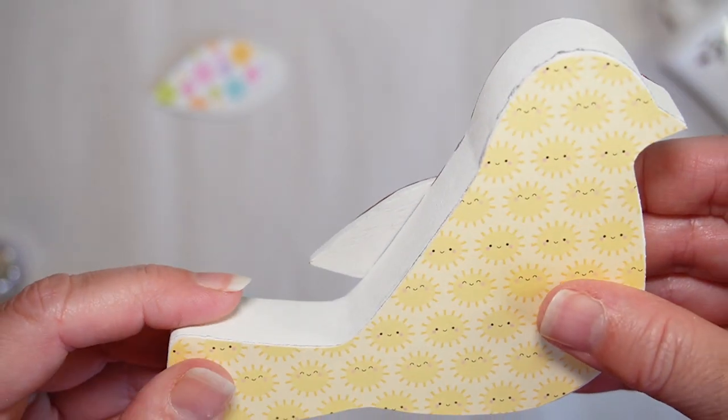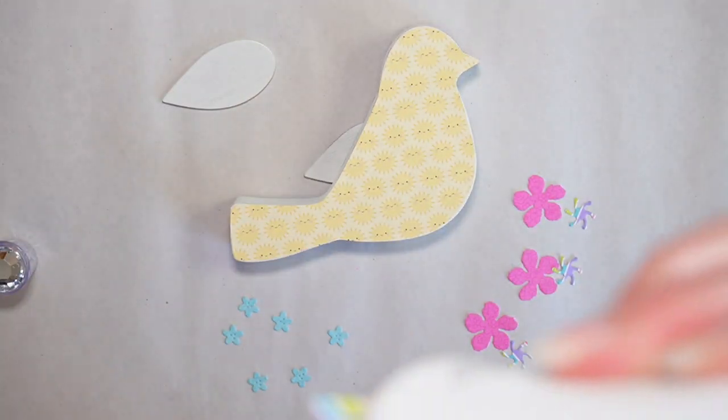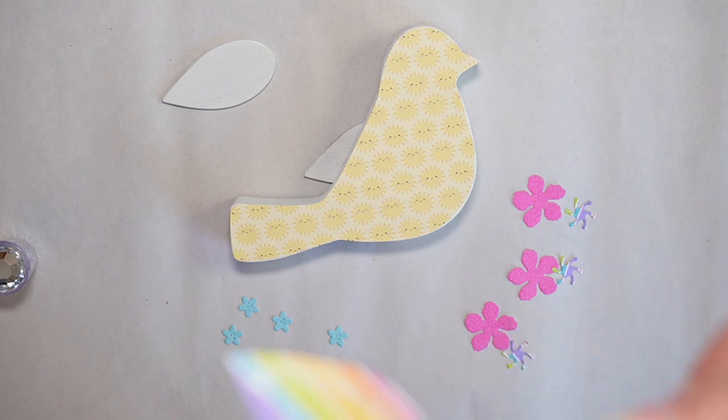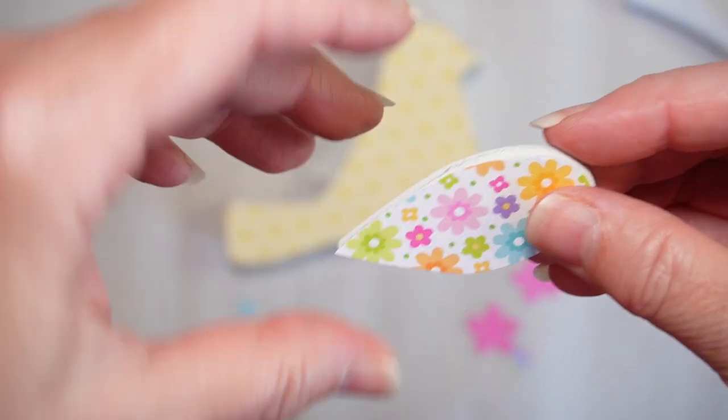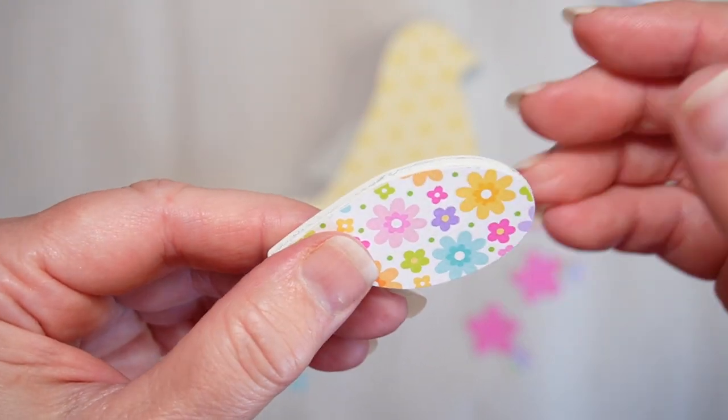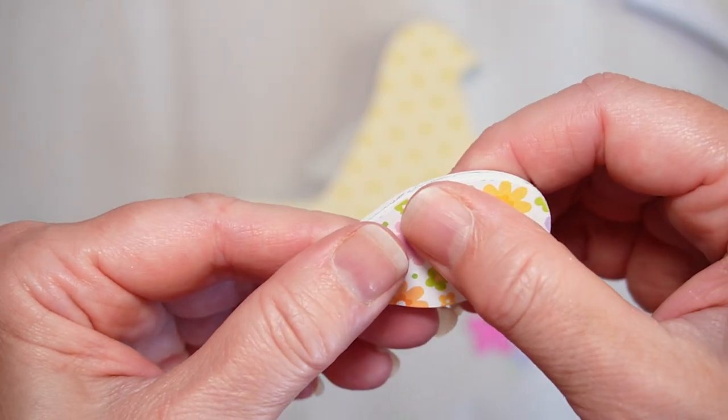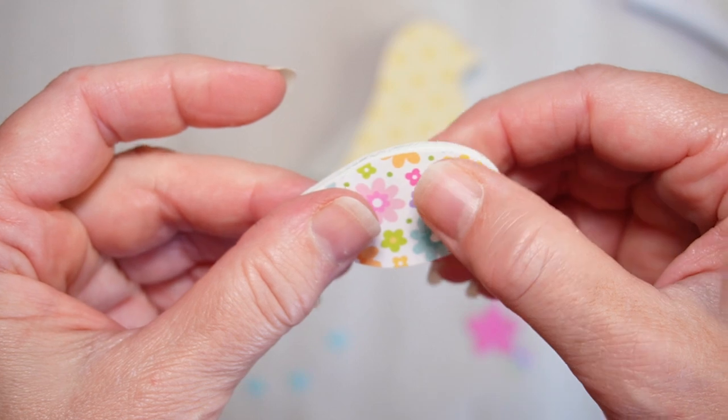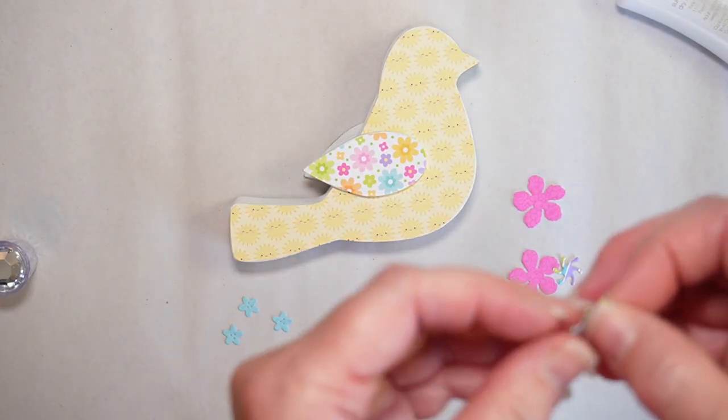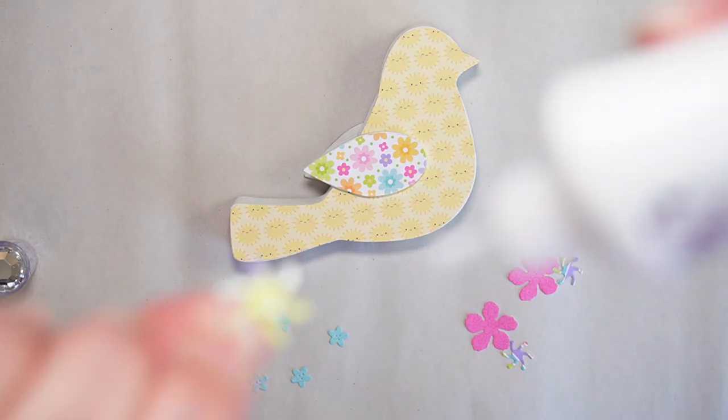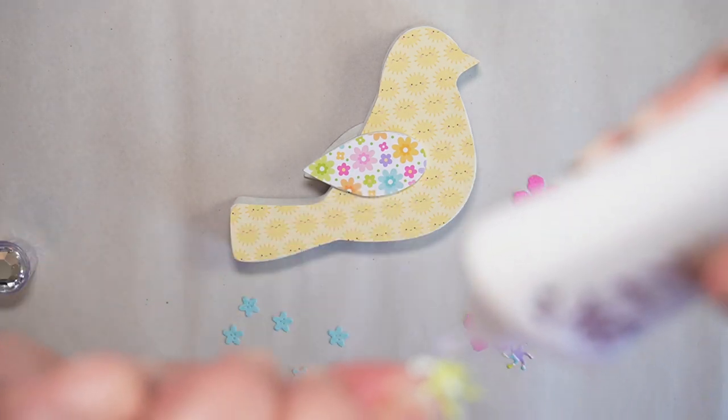Yep, looks good. Now gluing the paper onto the wing. I knew that I wanted to change this bird from February and Valentine's kind of look to a spring or Easter kind of look, and I wanted to just do a little something different and try putting some paper onto the back.